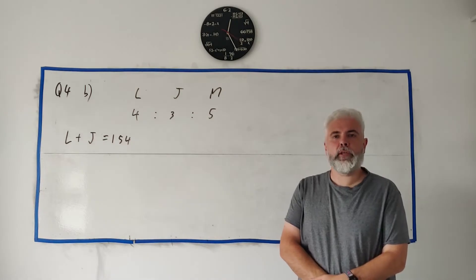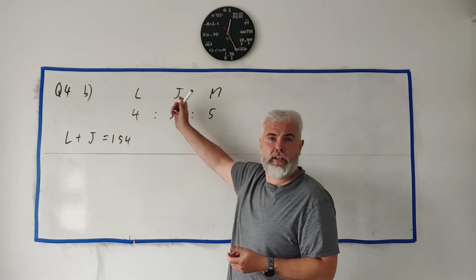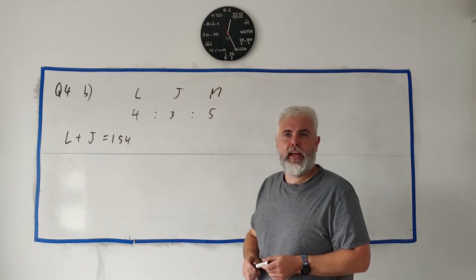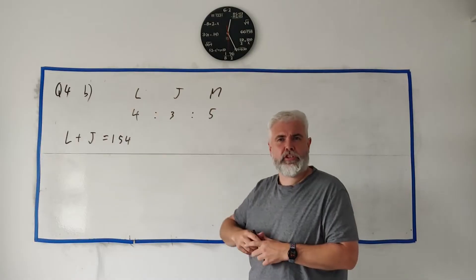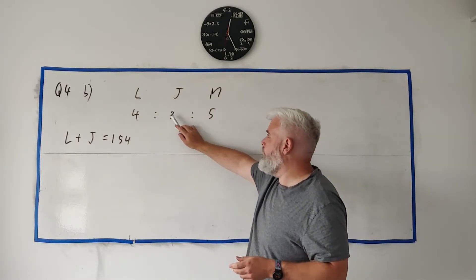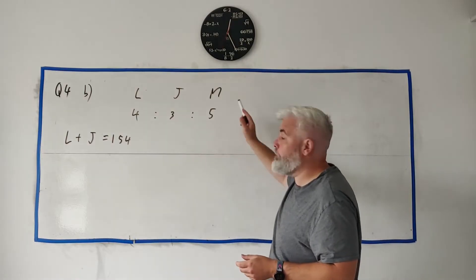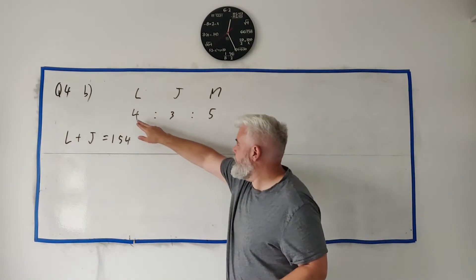In part B we have this situation where three people, Liam, John and Marta, split a bill. They split in this ratio, and Liam, for every 4 Liam pays, John pays 3 and Marta pays 5.